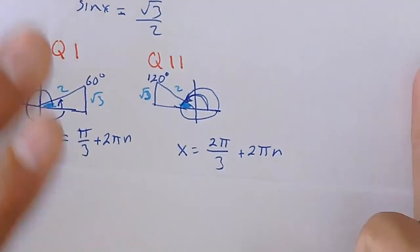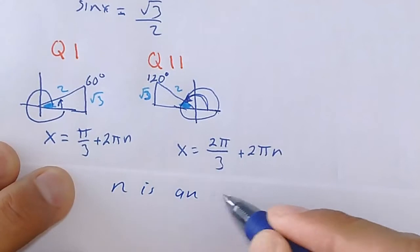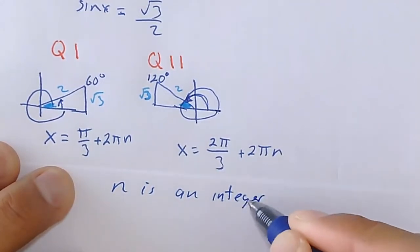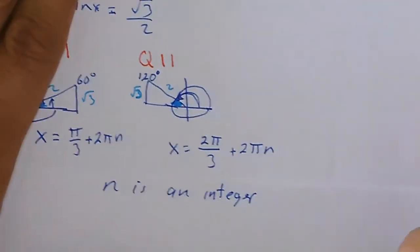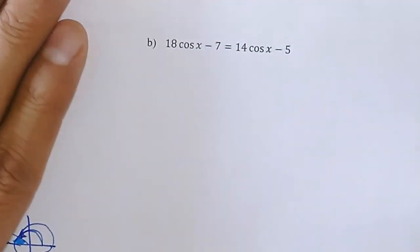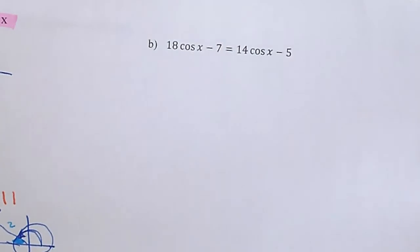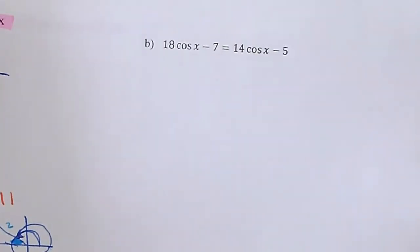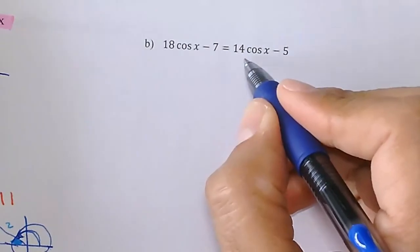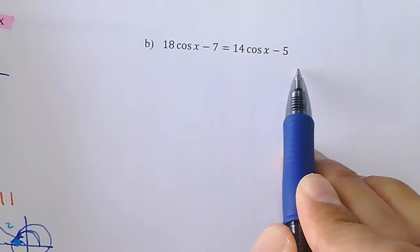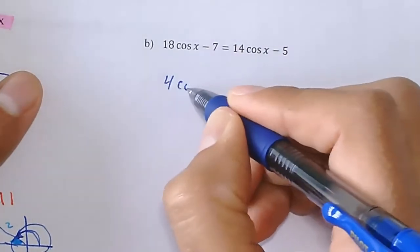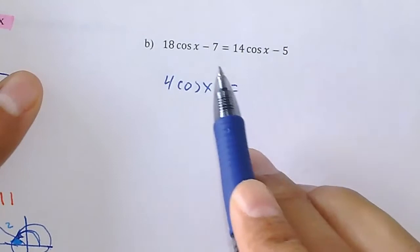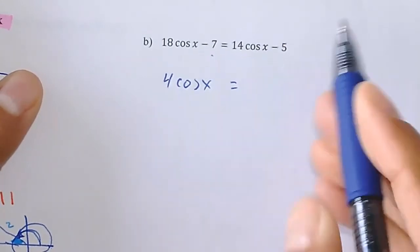Now look at number two. Pause the video, work it out, then push play. To isolate the cosine, I subtract 14cos(x) from one side and add 7 to the other. Subtracting 14cos(x) gives me 4cos(x); adding 7 gives me 2. Dividing by 4 gives cos(x) = 1/2. Now I figure out the angle: when is cosine equal to positive one half?